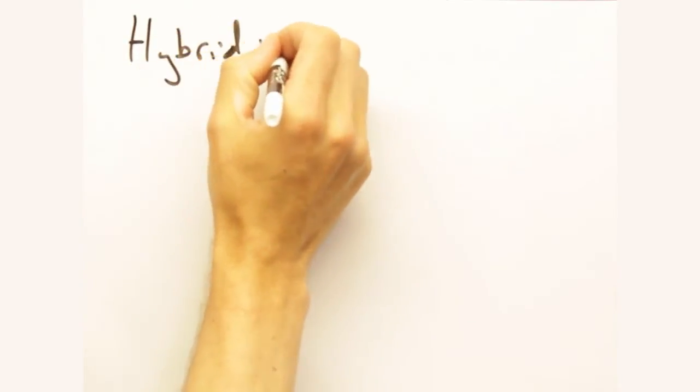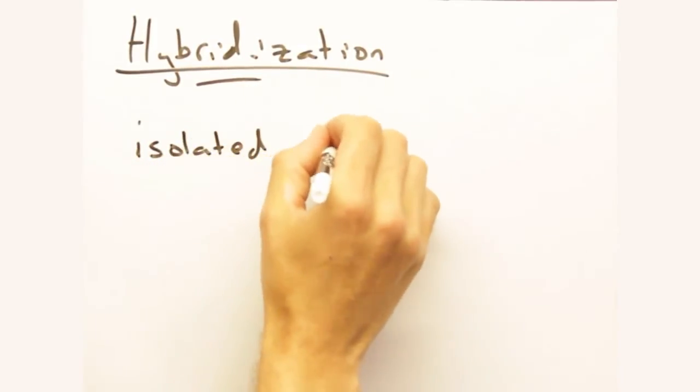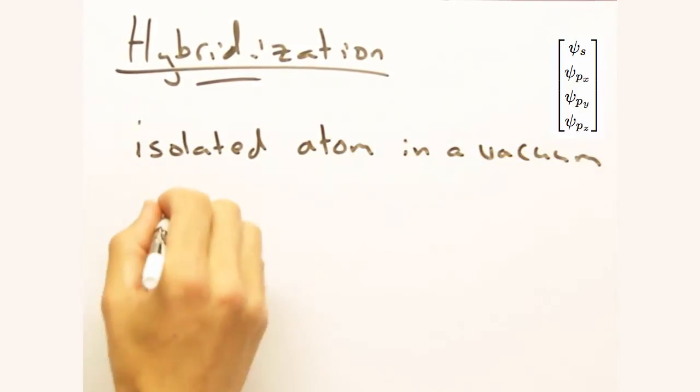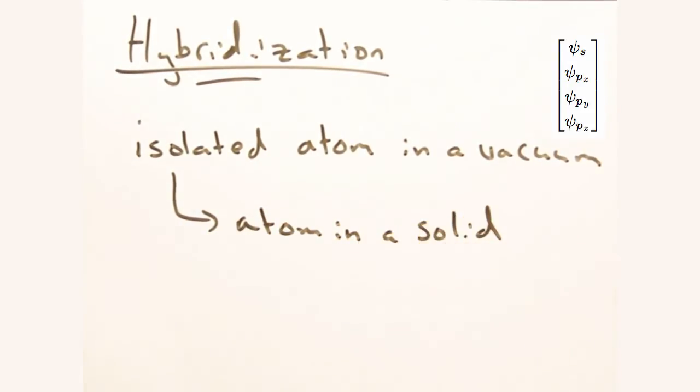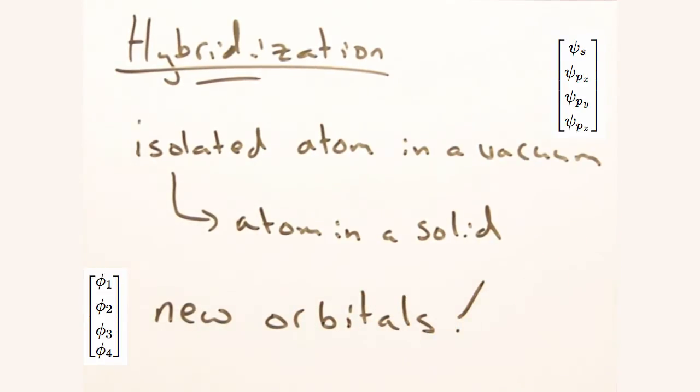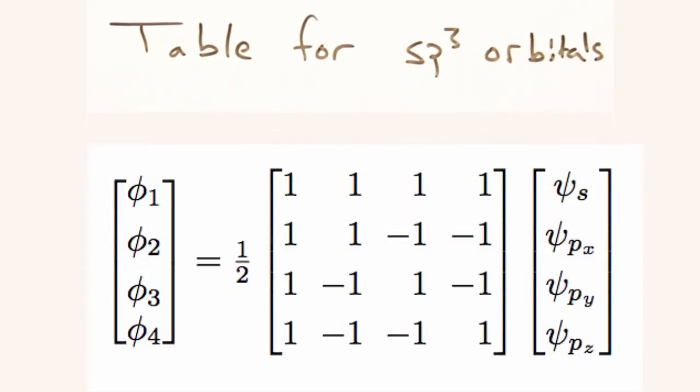We'll need to introduce another concept called hybridization. In quantum, when we developed the atomic orbitals, we assumed the atom was isolated and in a vacuum, right? Right. But in a real solid, that isn't the case. Exactly. In hybridization, these atomic orbitals reconstitute themselves into different orbitals. And you can see how we go from the original s and p orbitals to new hybrid orbitals from this table.